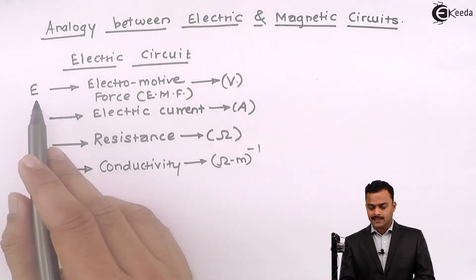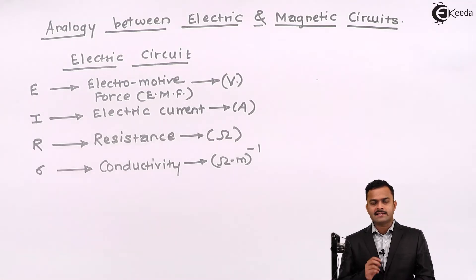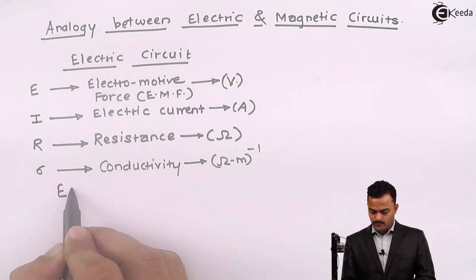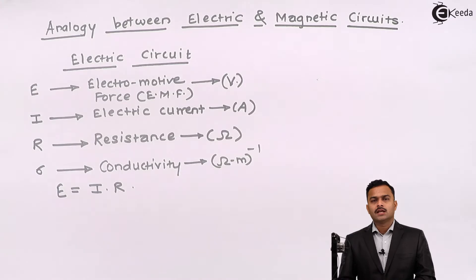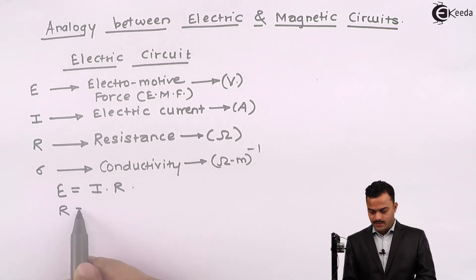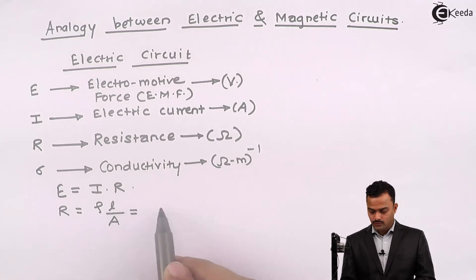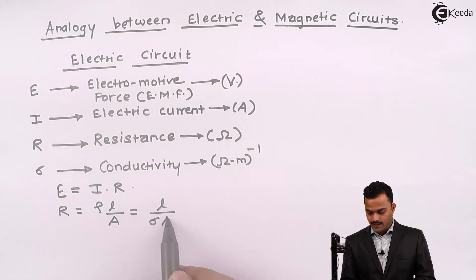This E is related to I and R by simple Ohm's law. So I can say E equal to I into R. Resistance is given as rho L upon A. Rho is the resistivity which is the inverse of conductivity. So in terms of conductivity, R equal to L upon sigma A.